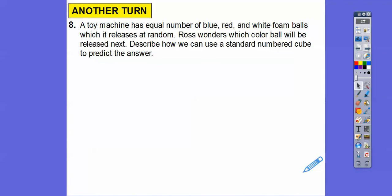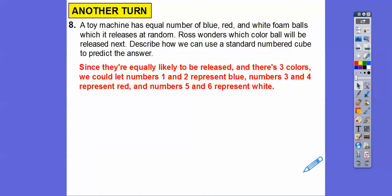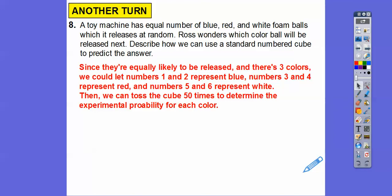One more. A toy machine has equal number of blue, red, and white foam balls, which it releases at random. Ross wonders which color ball will be released next. Describe how we can use a standard numbered cube to predict the answer. Since there's only three colors - red, white, and blue - and there's six sides, what we'll do is we'll let two of the numbers on the cube be one color, and the next two numbers be another color, and the next two numbers be the other color. That would make it equal. Since they're equally likely to be released, and there's three colors, we can let the numbers one and two represent blue, the numbers three and four represent red, and then five and six could be white. Then we can toss the cube 50 times and determine the experimental probability of each one and pick the one that has the most. We'll predict the next color, we'll pick the color that has the greatest experimental probability.